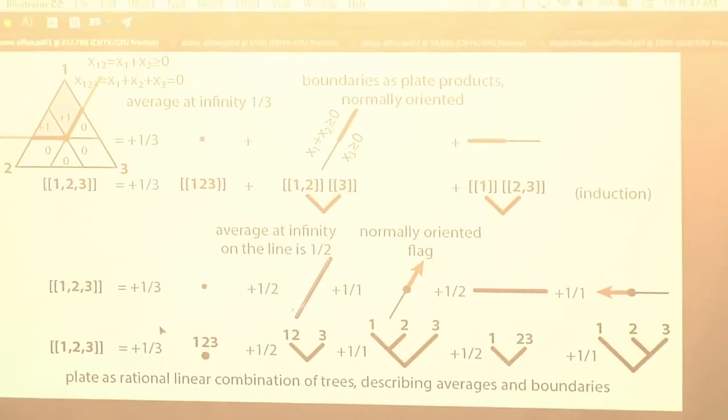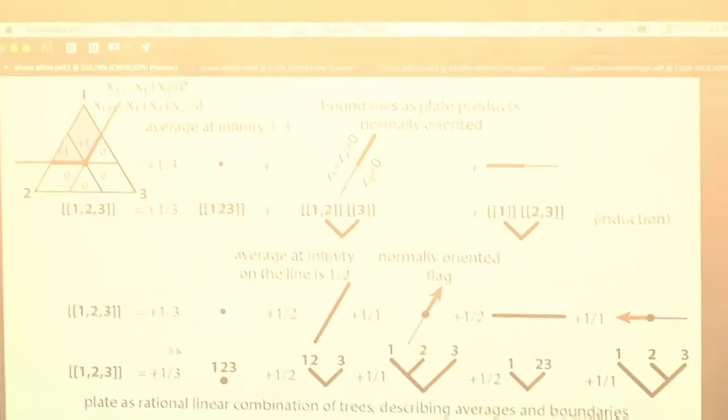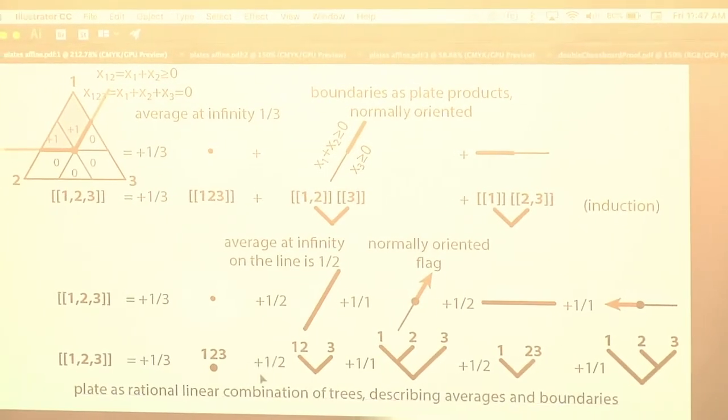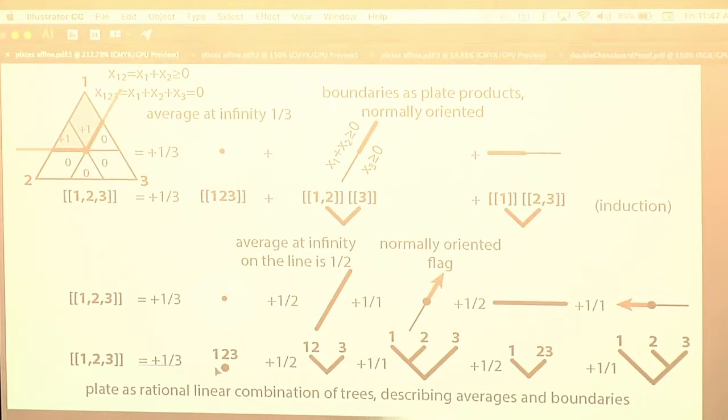And so, this is a full expression of the plate one, two, three by trees. Do you see? So it's one-third the tree one, two, three, with one lump, one, two, three. Do you see? It's one-third of the plane because the plate occupies one-third of the plane. This part clear?